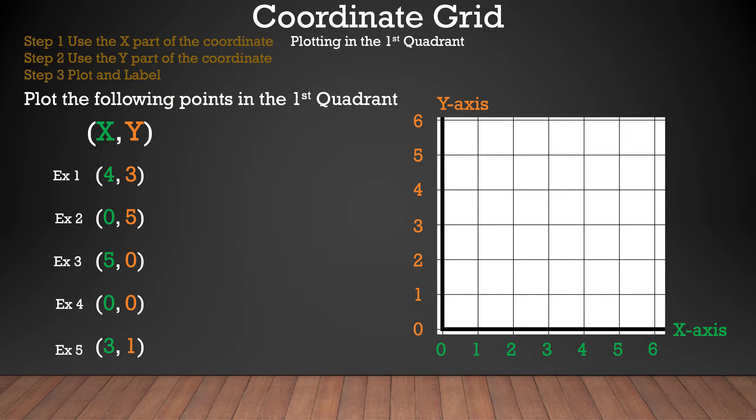Let's take a look at the first example. We're going to move four spaces to the right for the X, and then we're going to move three spaces up for the Y. Now we plot and label, and we're done with that example.